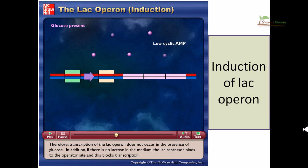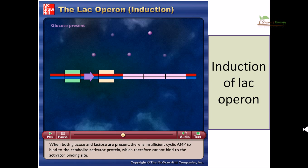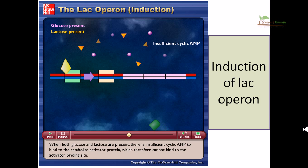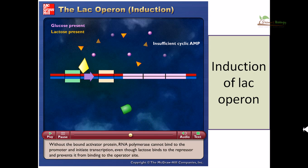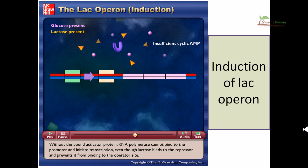If there is no lactose in the medium, the lac repressor binds to the operator site and blocks transcription. When both glucose and lactose are present, there is insufficient cyclic AMP to bind to CAP, which therefore cannot bind to the activator binding site. Without the bound activator protein, RNA polymerase cannot bind to the promoter and initiate transcription, even though lactose binds to the repressor and prevents it from binding to the operator site.